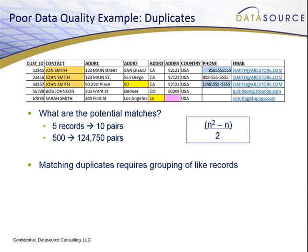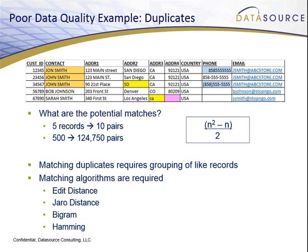We don't want to actually match all of these records together. We need to group the records based on whether the contact value or address is the same — it really depends on what you're trying to match. The grouping of records can take a long time. You want to make sure you have the right amount of records to effectively match and merge. If your data set is too large, you may spend a lot of time matching records that shouldn't be matched; if it's too small, you won't have any matches. As part of the matching process, you'll need to create and leverage algorithms — such as edit distance, Jaro distance, bigram, or Hamming — to correctly match the records and then proceed with merging.